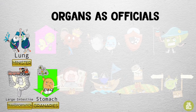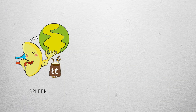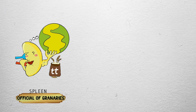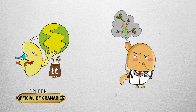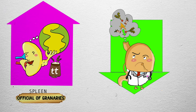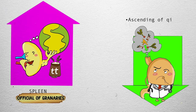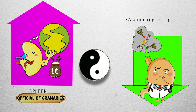The yin-yang pair of the stomach is the spleen. As we said before, the stomach and spleen share an office — both are the official of the granaries. The stomach is about going down and descending, but the spleen, on the other hand, is about raising up and the ascending of qi. Whereas the stomach is a yang, more masculine organ, the spleen is a yin organ, thought of as more feminine.